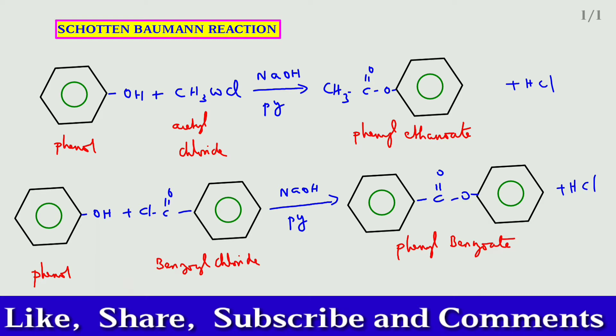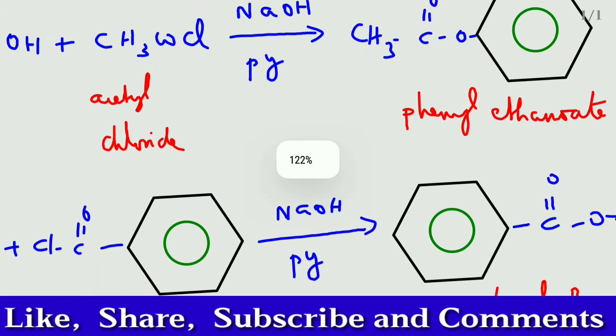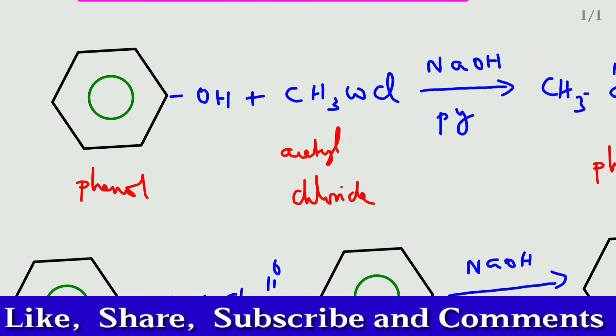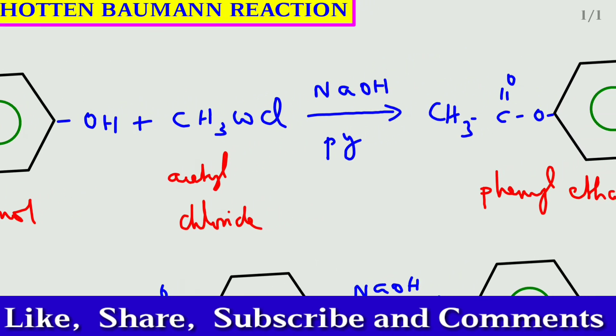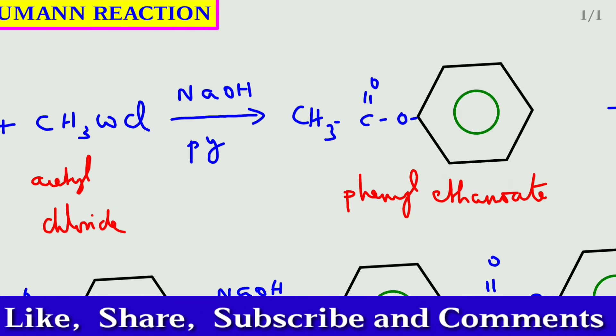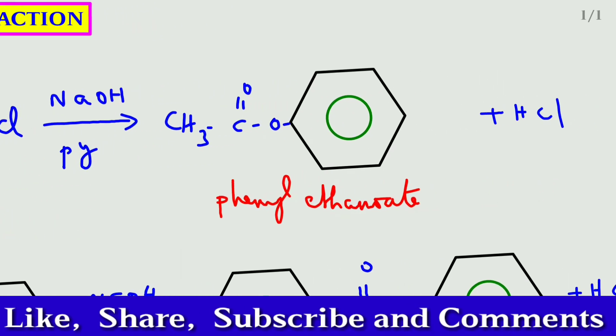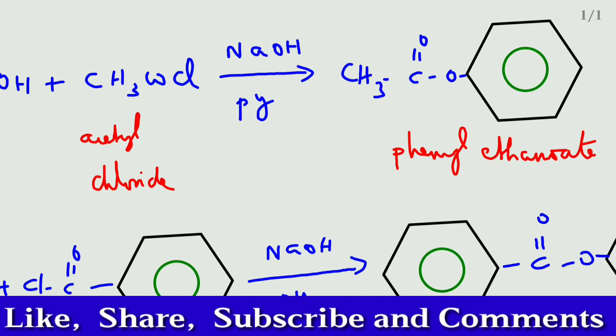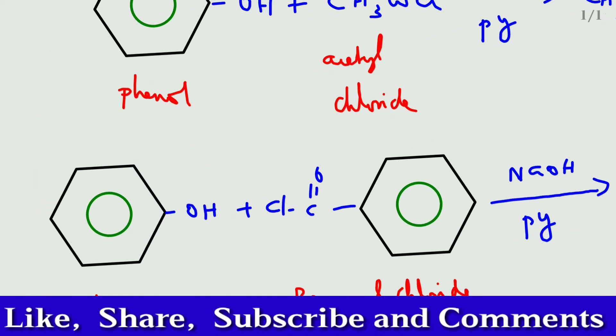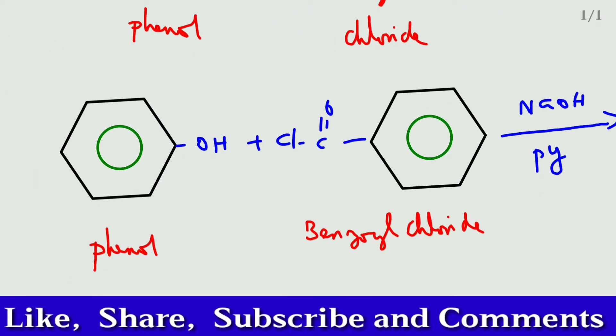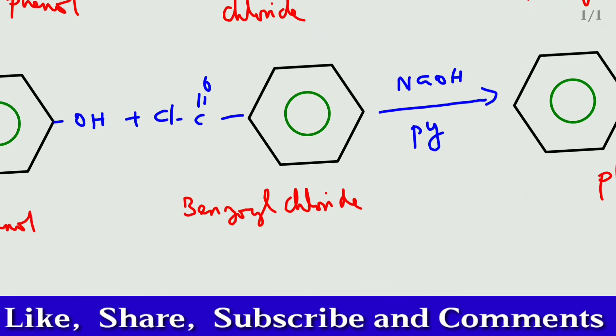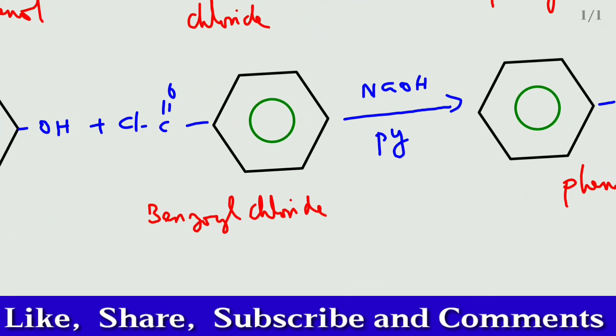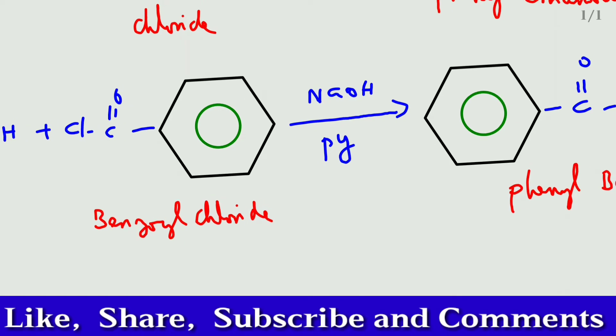Here I'm going to take phenol. Phenol reacts with acetyl chloride in the presence of sodium hydroxide and pyridine, it gives phenyl ethanoate with removal of hydrochloric acid. Similarly, when phenol reacts with benzoyl chloride in the presence of sodium hydroxide and pyridine, it gives phenyl benzoate.